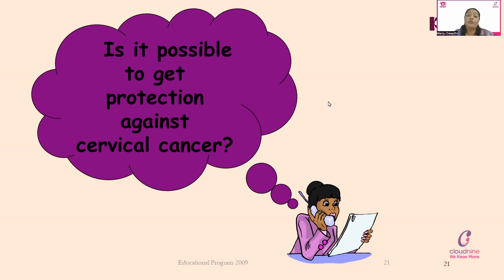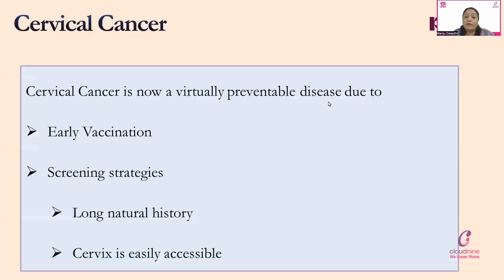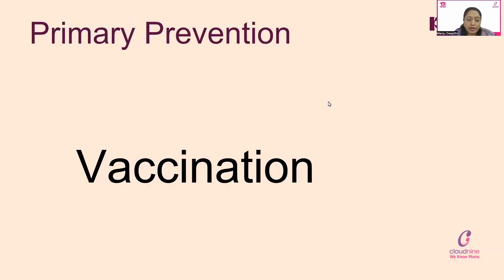Cervical cancer is mostly a disease of the later age group — commonly seen after age 45, 50, 55, or 60 — and is very rare in the reproductive age group. Prevention is better than cure. It is possible to virtually prevent cervical cancer through two phases: first, early vaccination — primary prevention — and second, through screening strategies which include history and diagnostic tests.